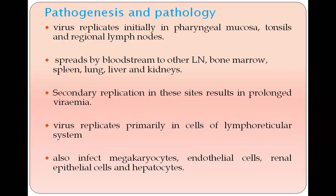Coming to pathogenesis: the virus initially replicates in the pharyngeal mucosa, tonsils, or regional lymph nodes, then spreads to the bloodstream. From the bloodstream it reaches other lymph nodes, bone marrow, spleen, lungs, liver, and kidneys. Secondary viremia develops and the virus mainly affects the lymphoreticular system, as well as megakaryocytes, endothelial cells, renal epithelial cells, and hepatocytes.